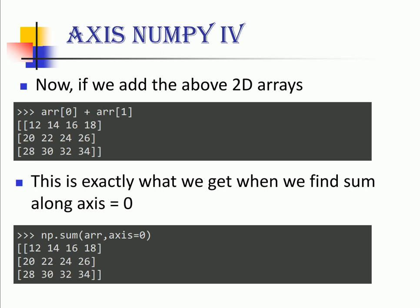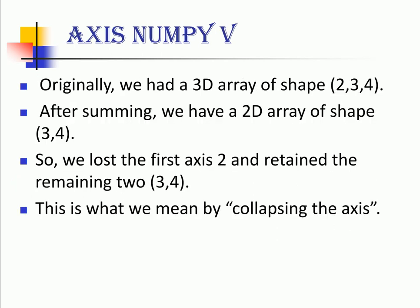Now when we add the two arrays we get a 2D array which turns out to be the same when we use the numpy sum function and axis equal to 0. So if you notice carefully, originally we had a 3 dimensional array of shape 2 x 3 x 4. After summing we have a 2D array of shape 3 x 4 that is 3 rows and 4 columns.